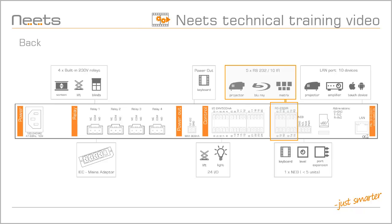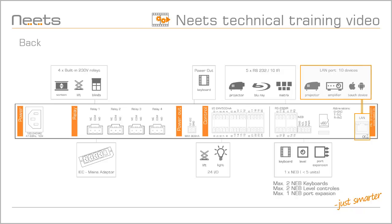Alpha 2 has 5 RS232 ports, where 3 ports have 2-way communication. Each port can be configured to be an IR port that is able to control 2 IR devices. The NEB port can be used to connect up to 5 NEETS NEB units. Last, we have the network connection.